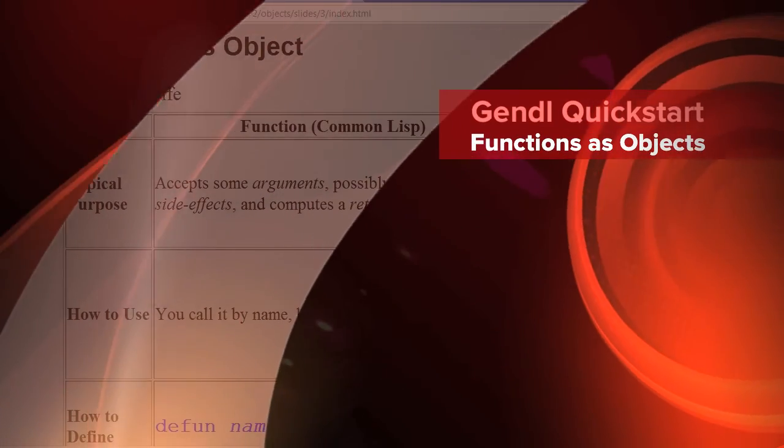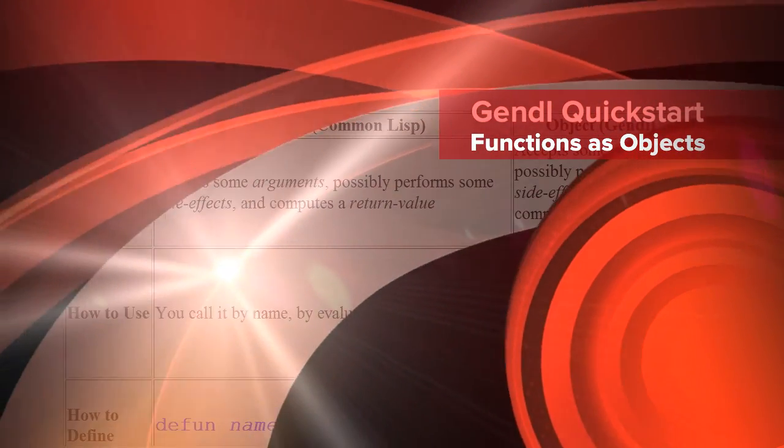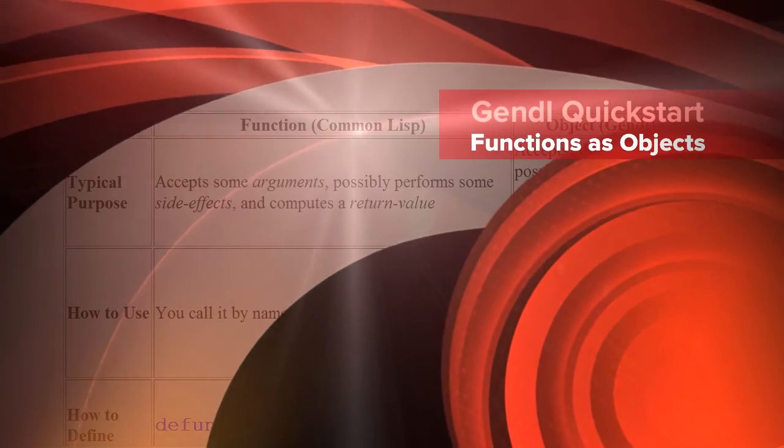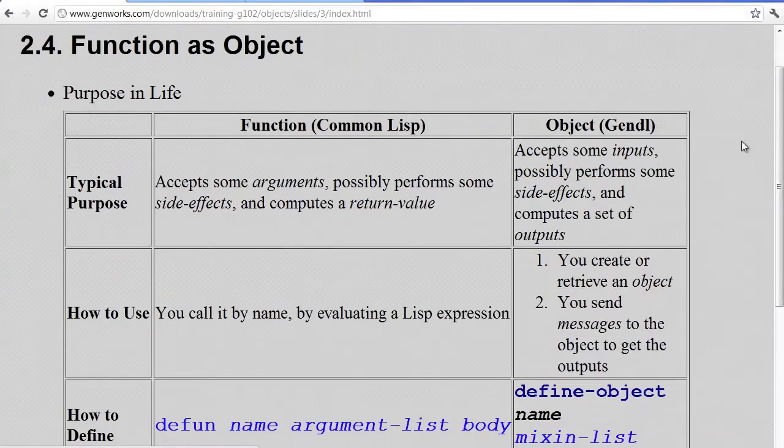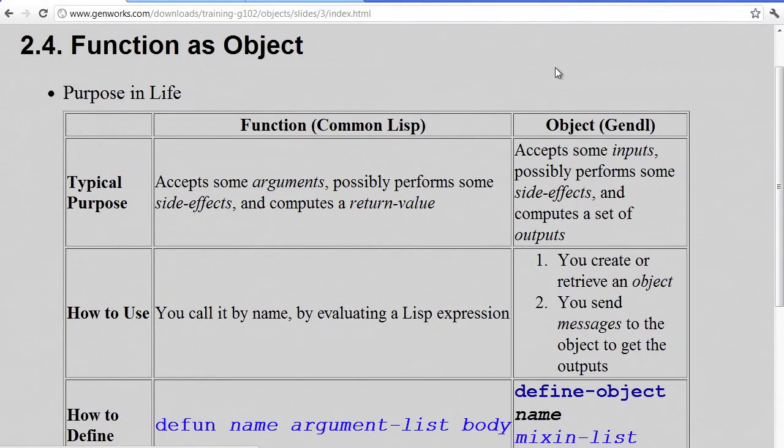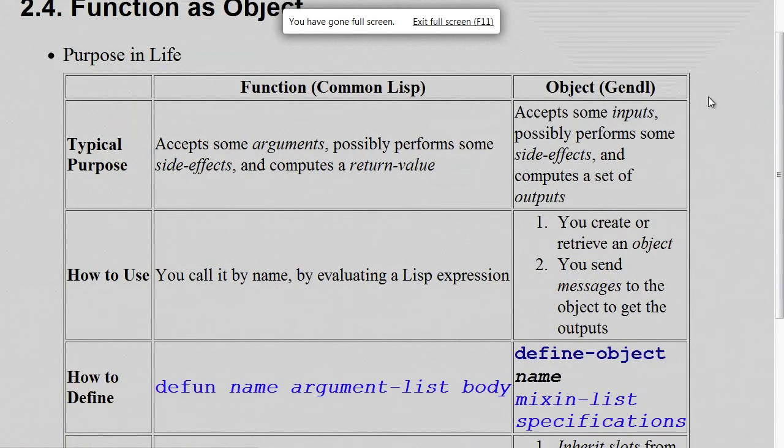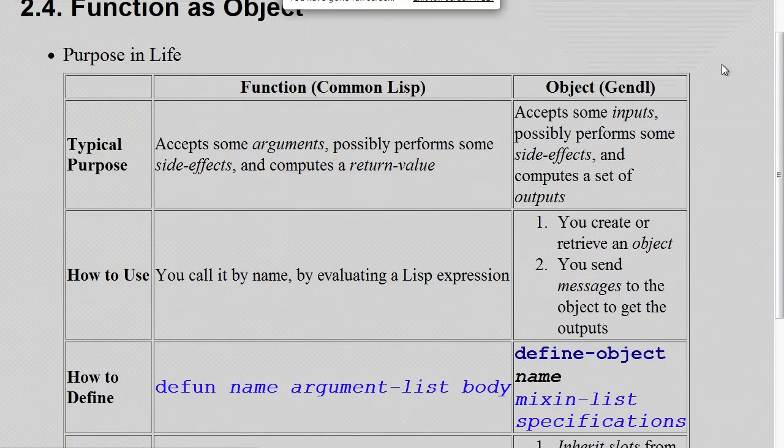Let's look at how we can think of a function as an object, or conversely, think of an object as a function. So what is the typical purpose of a function? It accepts some arguments, possibly performs side effects, and computes a return value, as we've seen.